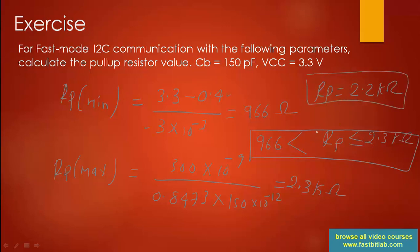If you select RP = 2.2 kΩ, that is a good value — it prevents excessive current consumption and satisfies the rise time requirements. However, if you blindly use 22 kΩ, that would cause problems: TR may exceed 300 nanoseconds when bus capacitance is significant. So everything has to be analyzed, ideally on an oscilloscope.